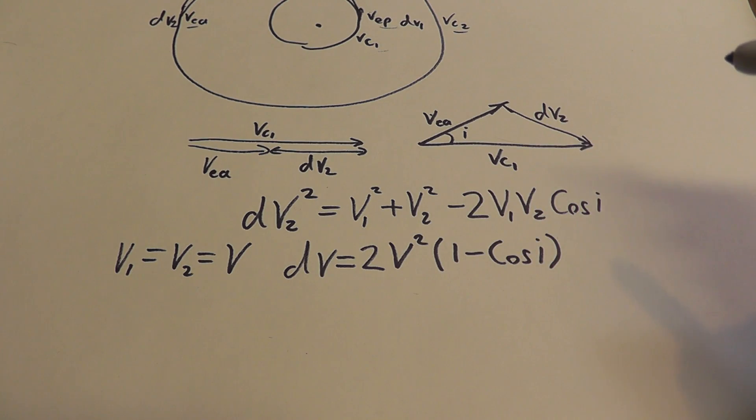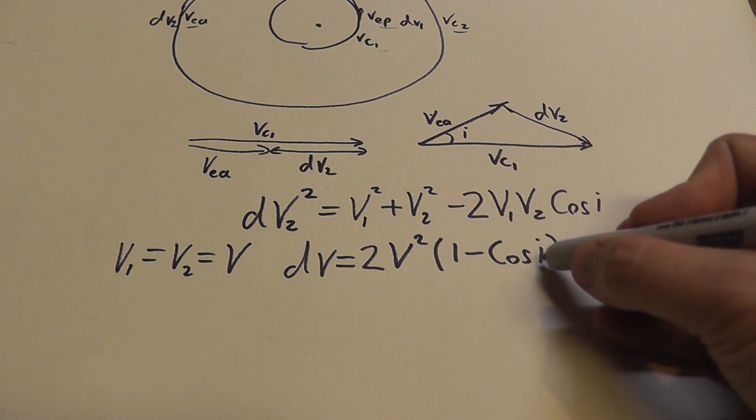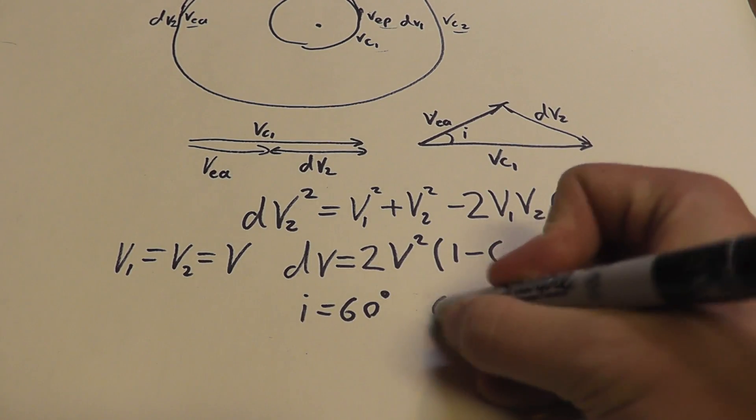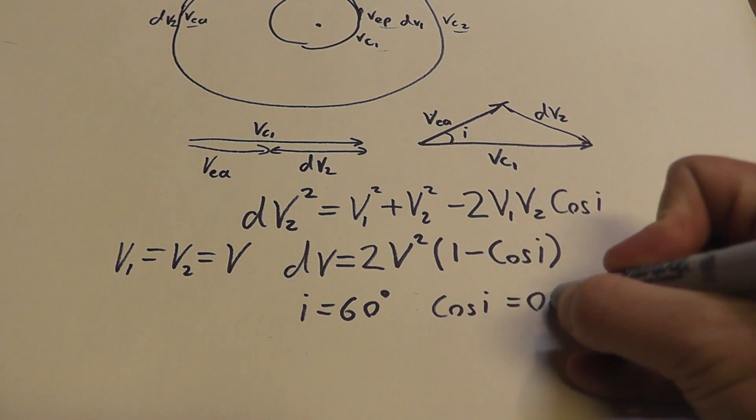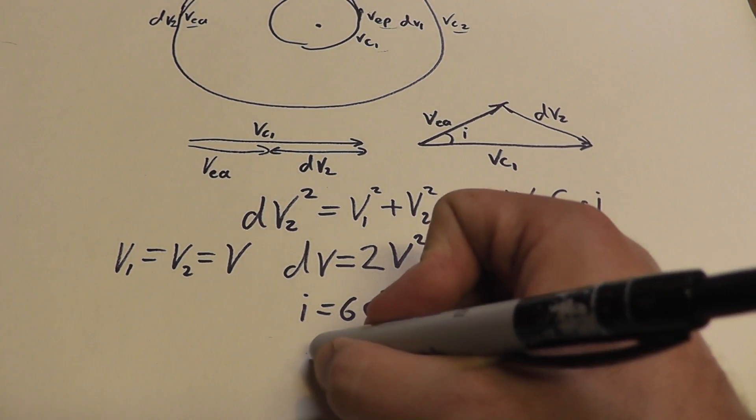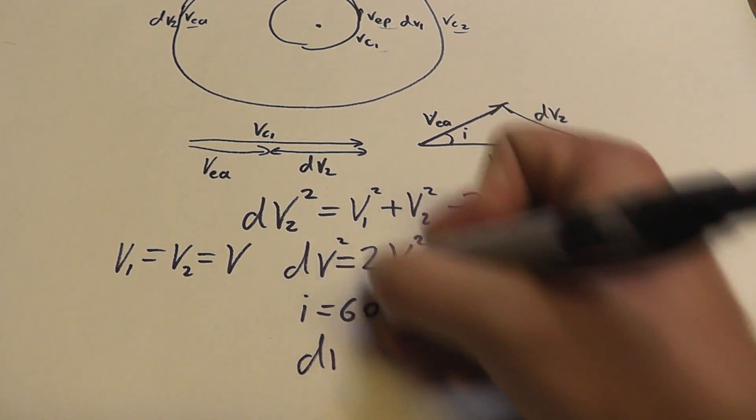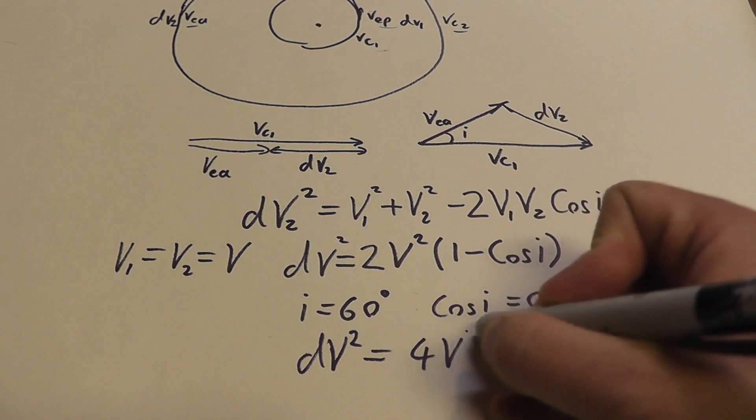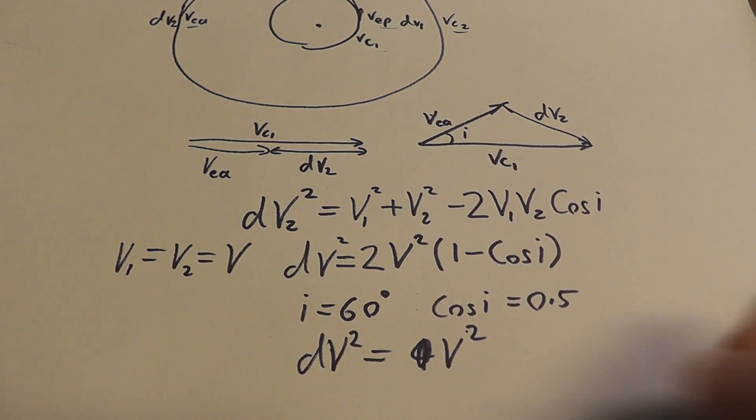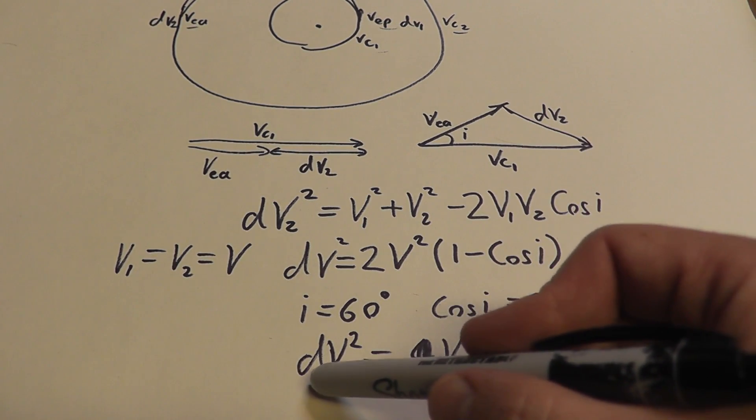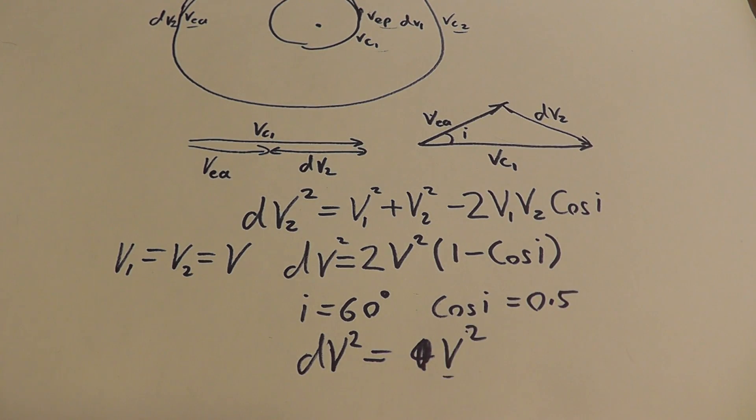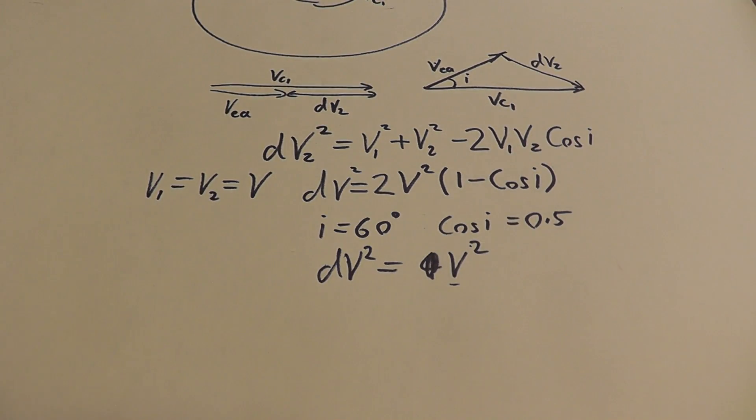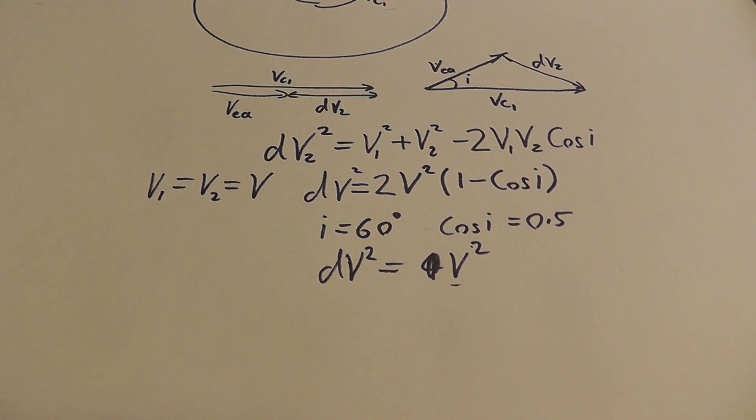If, on the other hand, i is equal to 60 degrees, then cosine i is equal to 0.5. And that then says that dv squared is equal to v squared, which ultimately says that your delta v is equal to your velocity if you make a 60 degree plane change. And if you make a 180 degree plane change, it's 2 times your velocity.